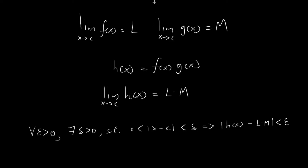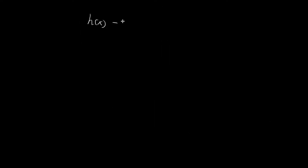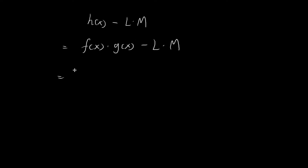In order to establish our proof, we need to show that if x is sufficiently close to c, then the expression |h(x) - LM| can be made arbitrarily small. We focus on the h(x) - LM term. By definition, h(x) = f(x)·g(x). I'll manipulate the f(x) term by expressing it as (f(x) - L) + L. Since we're subtracting and adding L, it doesn't change anything, so it's perfectly valid.